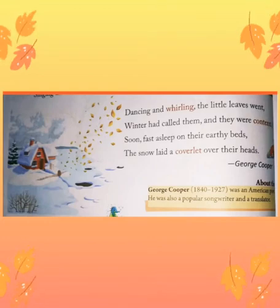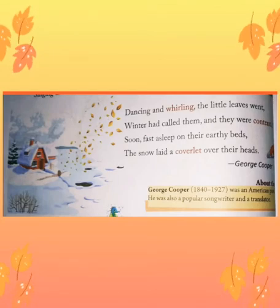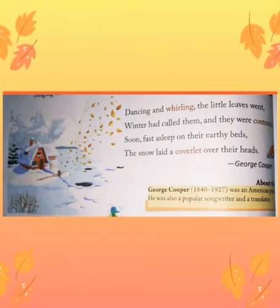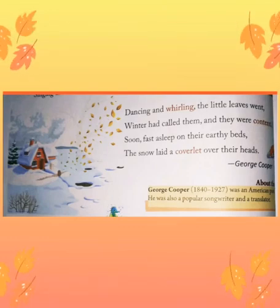Here the poet explains how the leaves whirl and dance with the wind. When the wind calls the leaves, they were dancing and whirling because summer has ended and winter has arrived. And what is the specialty of this winter? They bring snow with it. The wind stops and the leaves fall to the ground where they are covered by a snowy bed, with earthy beds and the snow used as their blanket.